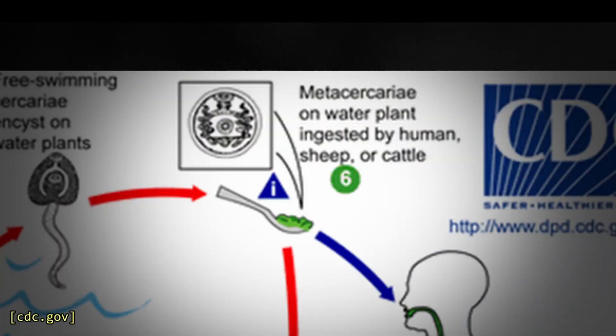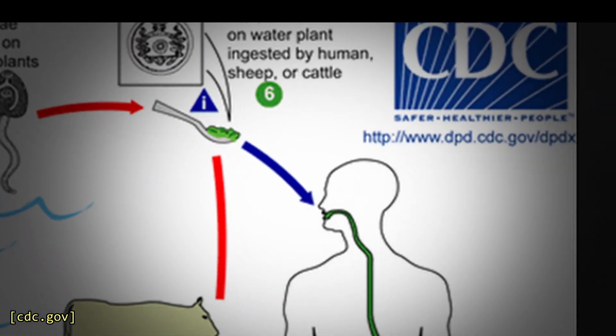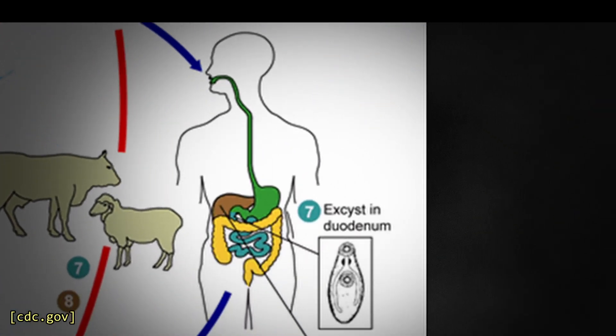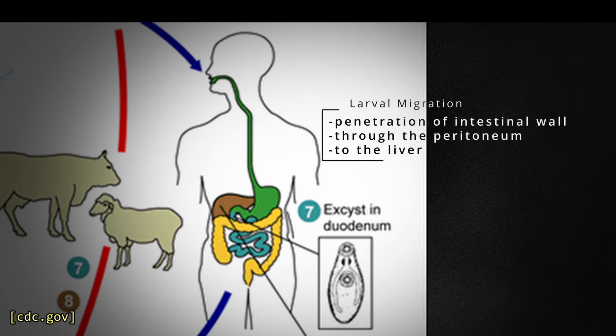Infection occurs when humans ingest the infective stage called the metacercariae through the consumption of contaminated water plants. The metacercariae travel to the duodenum, where the parasite larva is released, and the larva then penetrates the intestinal wall and migrates through the peritoneum to the liver parenchyma. This migration can last up to 6 days.